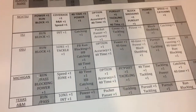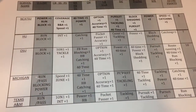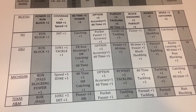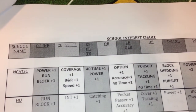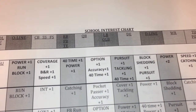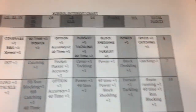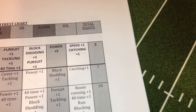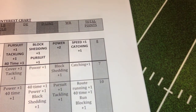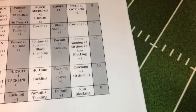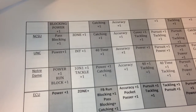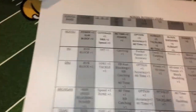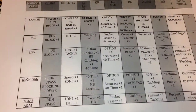I have a school interest chart for every school in the conference. Basically what this does is it shows you what each school's interest is in their recruits. Up here at the top you see O-line, secondary, running back, fullback, tight end, quarterback, linebacker, defensive line, wide receiver, and total points. The total points on the end is the total number of points that a recruit has to receive by the end of the recruiting period in order to qualify for a scholarship to that school. I'm gonna flip it to the back — I have the other schools back here: North Carolina State, the Tar Heels, Notre Dame, ECU.